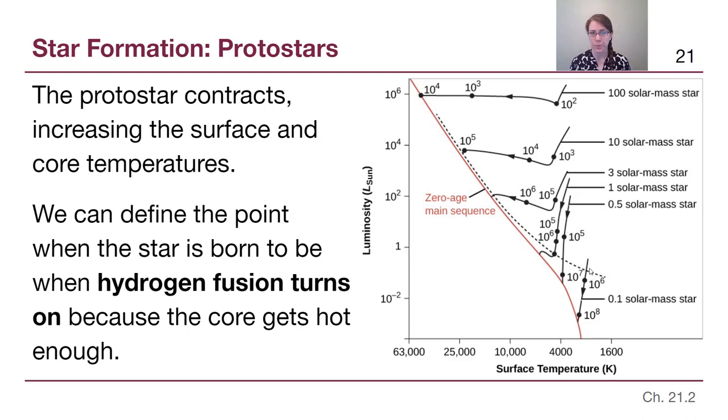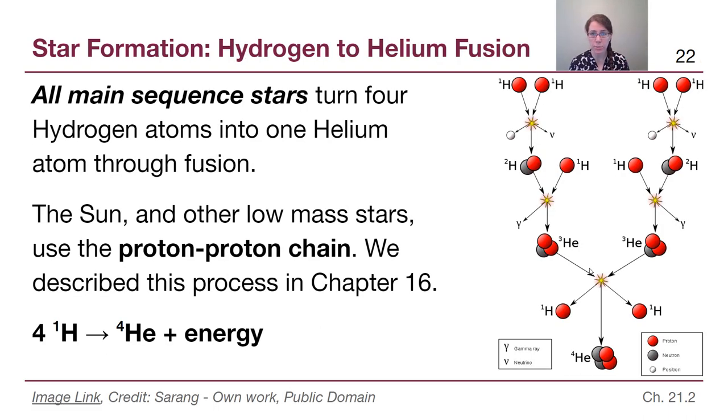So we talked about in chapter 16 that the Sun uses what's called the proton-proton chain. We saw this picture even back in those slides. All main sequence stars, all stars that are on their normal part of their lifetime, they will be turning four hydrogen into one helium atom through fusion. However, they don't all use the proton-proton chain. The Sun and other low mass stars like it, especially lower mass than the Sun, they use the proton-proton chain that we described back in chapter 16.